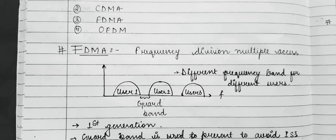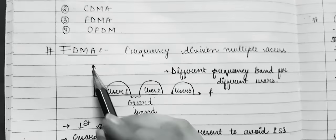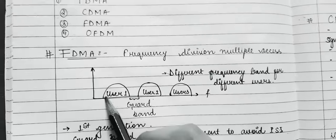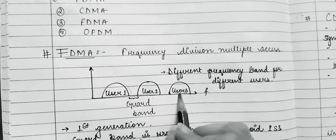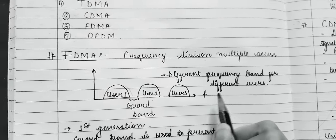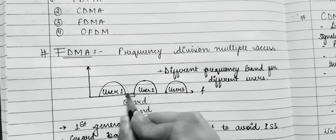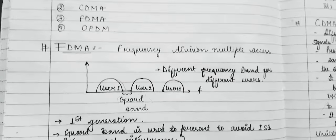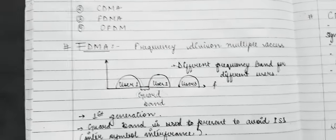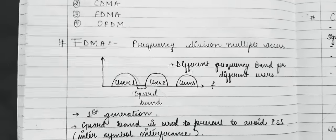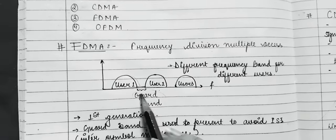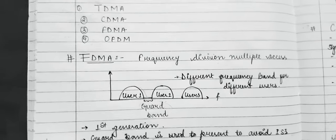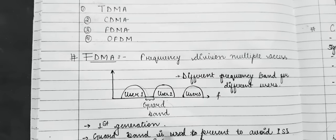First we talk about FDMA — Frequency Division Multiple Access. Here we take different frequency bands for different users: user 1, user 2, and user 3. There is a space between user 1 and user 2 known as the guard band. The guard band is present to avoid ISI — that is inter-symbol interference.